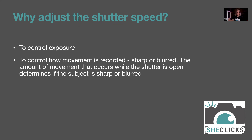Why do you adjust shutter speed? First, to control exposure — making the image brighter or darker. The real reason you'd want to control shutter speed specifically is to control how movement is recorded: whether you want the subject sharp or blurred. The amount of movement that occurs while the shutter is open determines if the subject is sharp or blurred. A fast-moving subject can streak across the frame in a 60th of a second.